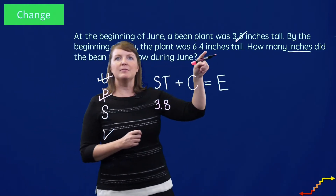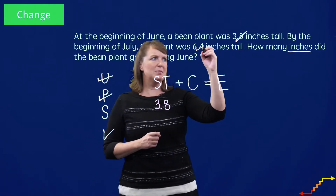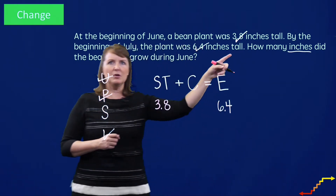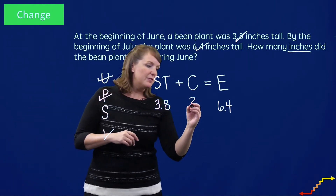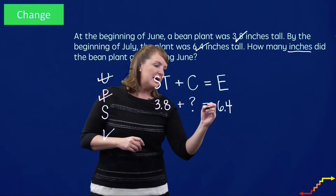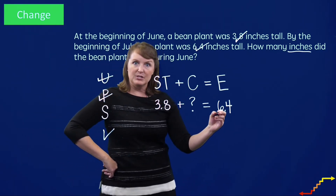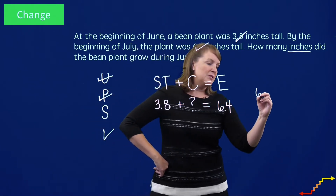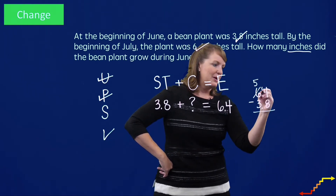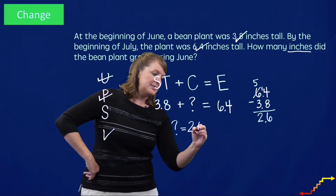By the beginning of July, the bean plant was 6 and 4 tenths inches tall — that's the end amount, how much the bean plant is now. So that's 6 and 4 tenths inches. The question is, how many inches did the bean plant grow? So we have to figure out the change in height. Now to solve this, I'll put in my signs. I could start with 3 and 8 tenths and add up to 6 and 4 tenths. I could also start with 6 and 4 tenths and subtract 3 and 8 tenths — and today that's what I choose to do. The bean plant grew 2 and 6 tenths.